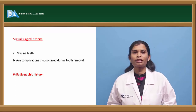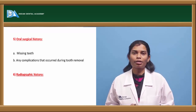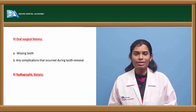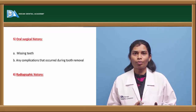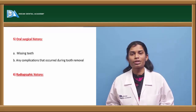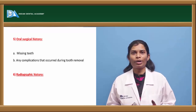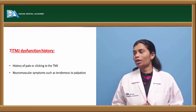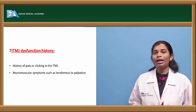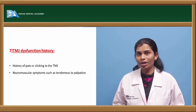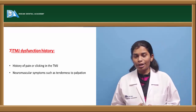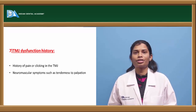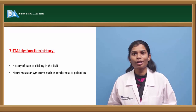Coming to radiographic history — this includes any previous radiographs from earlier treatments the patient has undergone. Comparing previous radiographs with current ones allows you to assess the condition and how it has been maintained since treatment. For TMJ dysfunction history, it is important to collect information about any complaints of pain, clicking, neuromuscular symptoms, deviations during wide opening, or any dislocations.